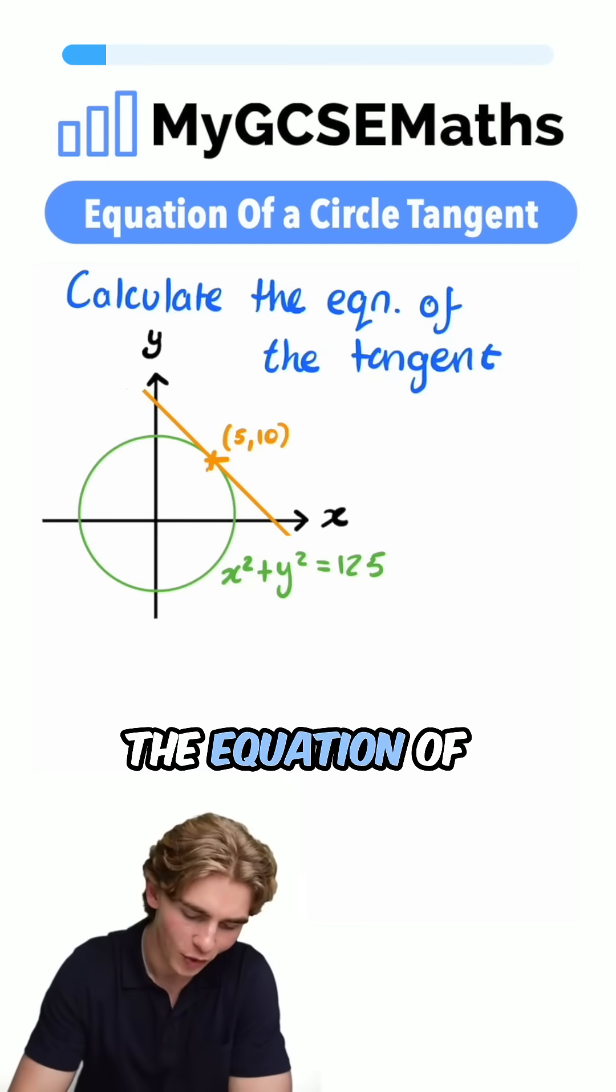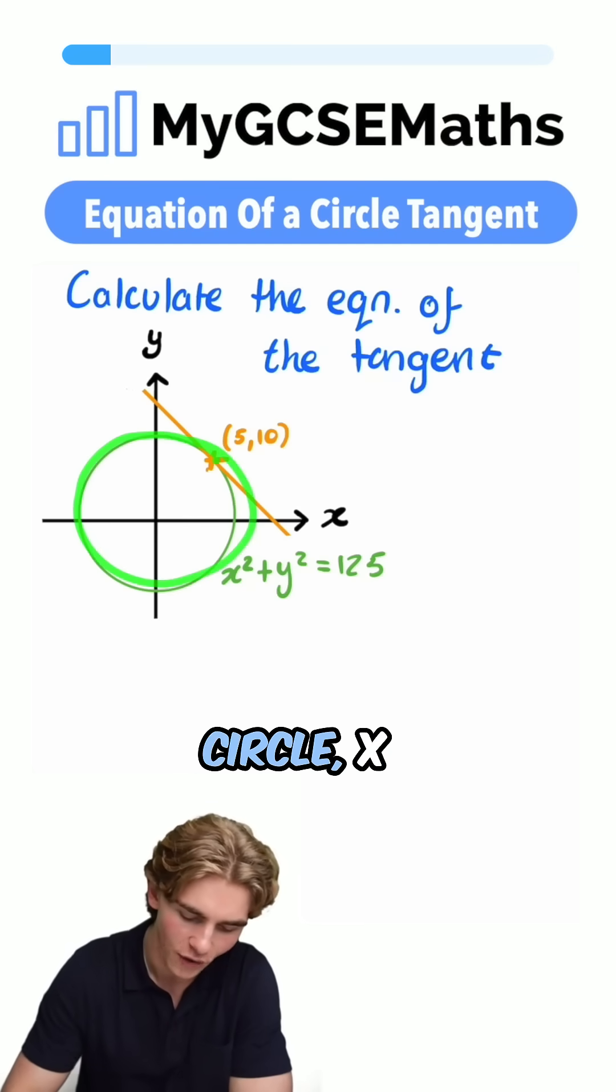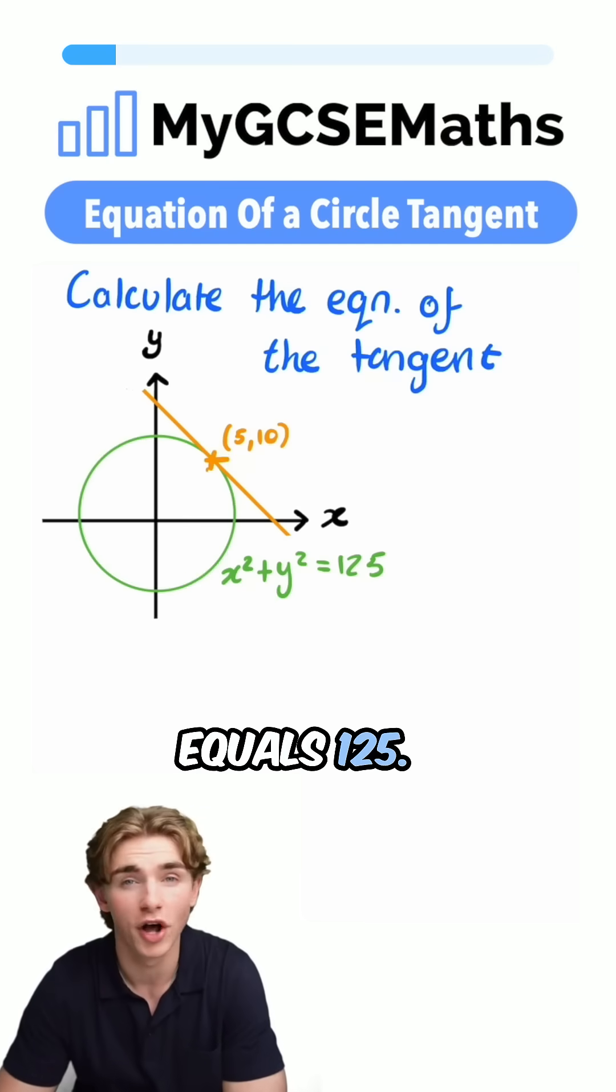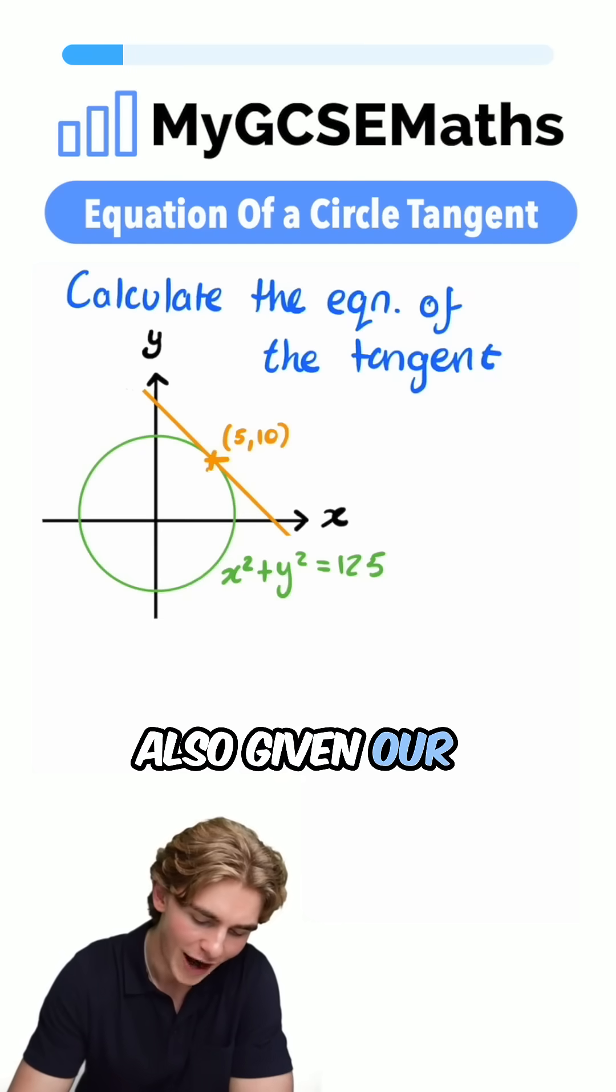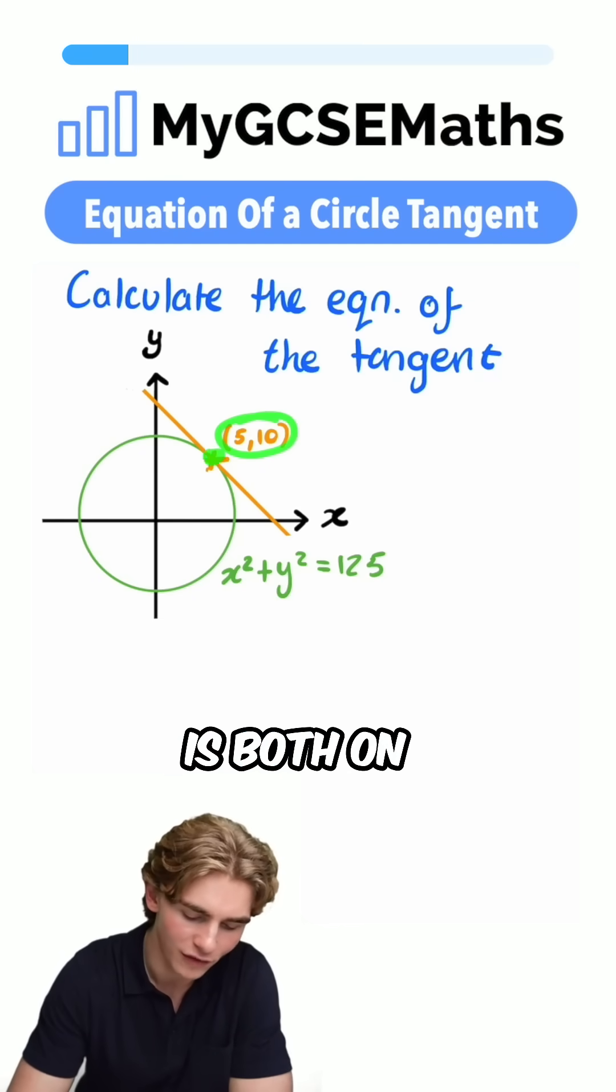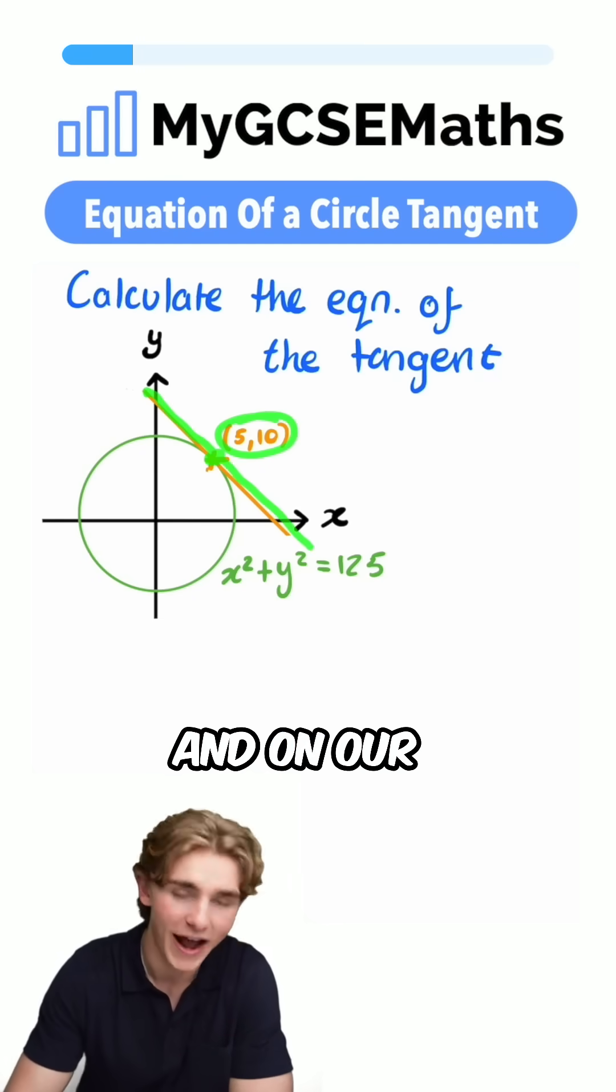In this question, we're given the equation of this circle, this green circle, x² + y² = 125. And then we're also given our point (5, 10), which is both on the circle and on our tangent.